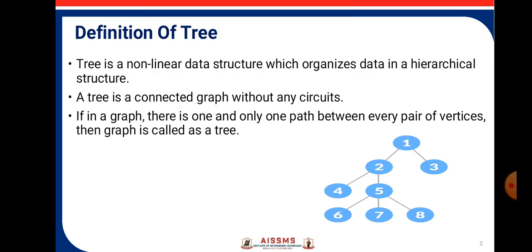The definition of tree: Tree is a non-linear data structure which organizes data in a hierarchical structure. A tree is a connected graph without any circuit. If in a graph there is one and only one path between every pair of the vertices, then the graph is called a tree. As you can see in the diagram which represents a tree.